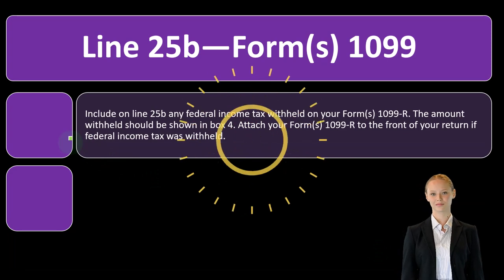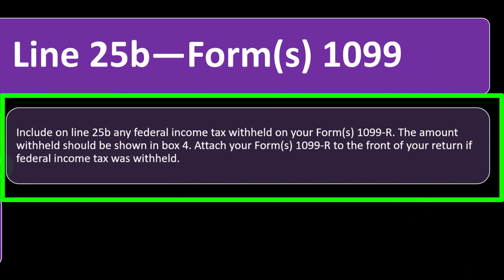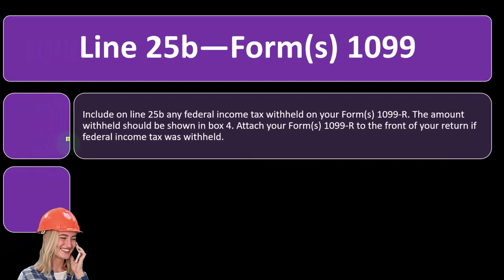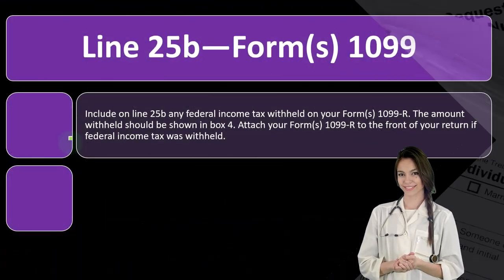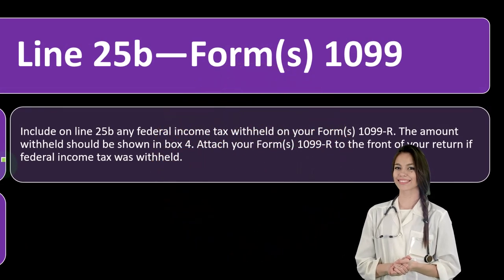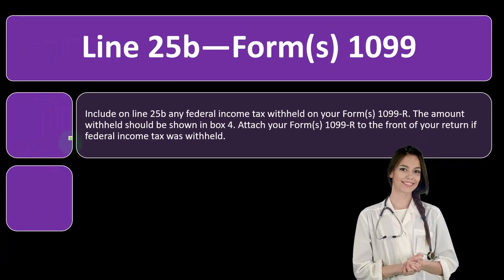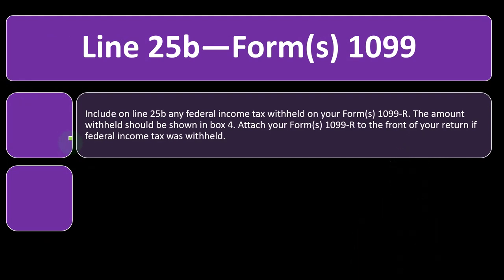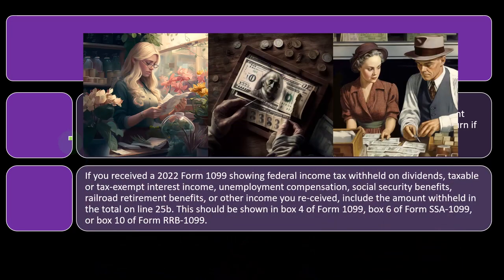Attach your Forms W-2 to your return. Line 25b, Forms 1099: include on Line 25b any federal income tax withheld on your Forms 1099-R. If you're dealing with people in their working years they'll have W-2 forms; if dealing with retirees, the major forms reporting income are the 1099-R — distributions from retirement plans. You could do withholdings from the 1099-R, or they might structure their payment system to make estimated payments. The amount withheld should be shown in Box 4; attach Forms 1099-R to the front of your return if federal income tax was withheld.